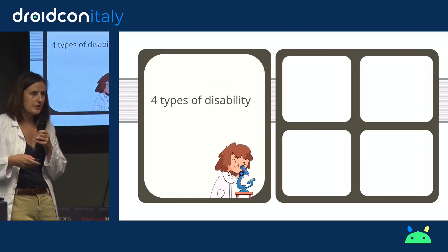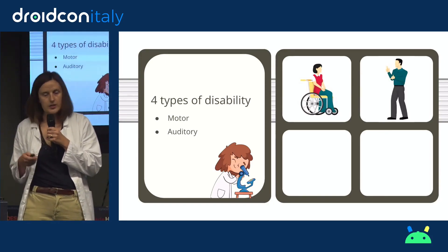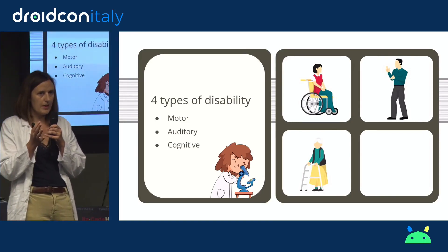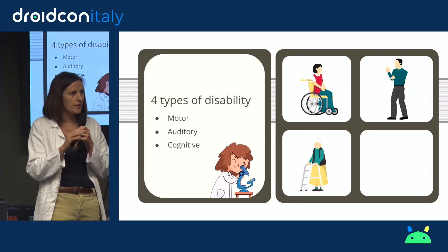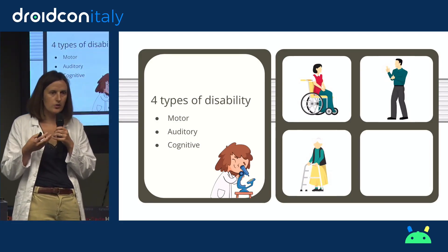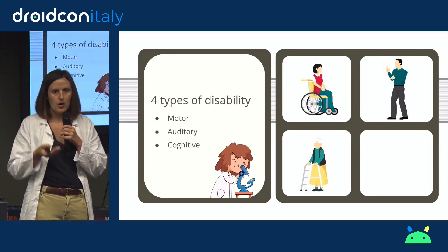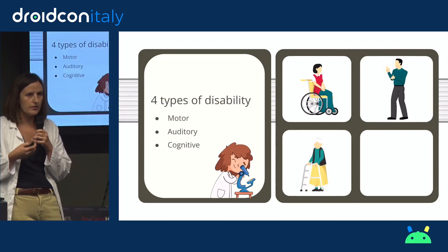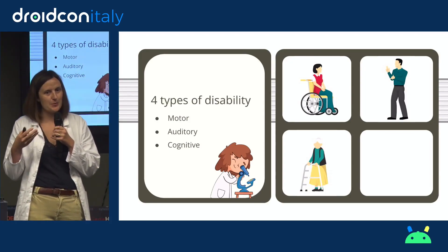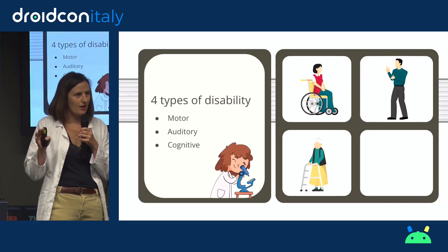There are four types of disability: motor disability, auditory disability, cognitive disability — and I want to make a short definition for this category because it may be the least known. This concerns people with mental illness like Alzheimer's disease, but also autism, depression, and so on. And even when you have taken drugs or alcohol, you might experience the same difficulties as this category.